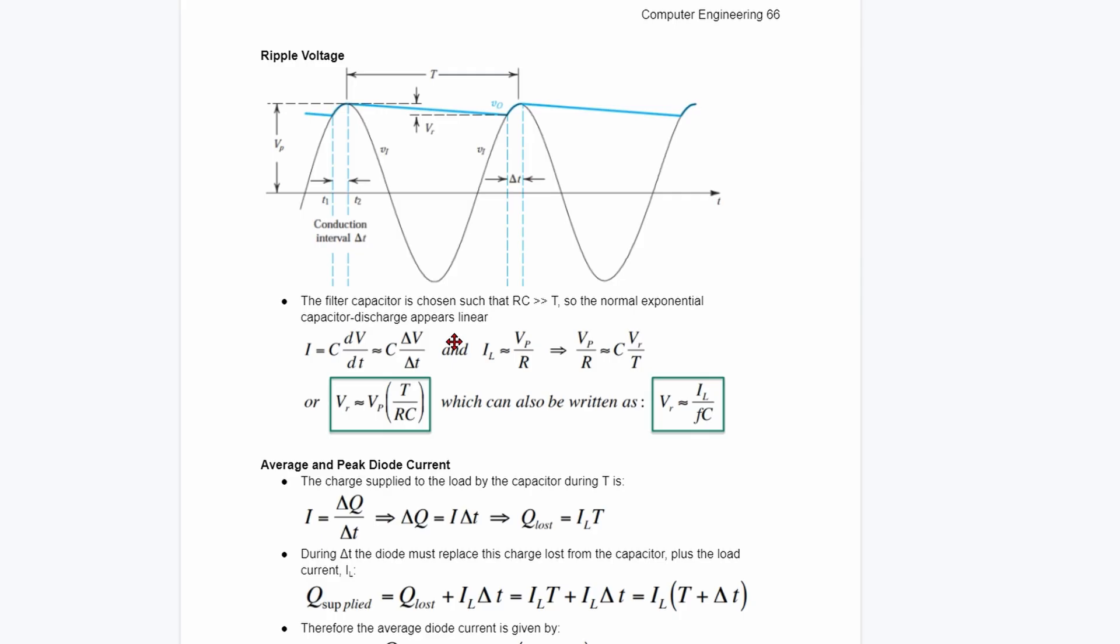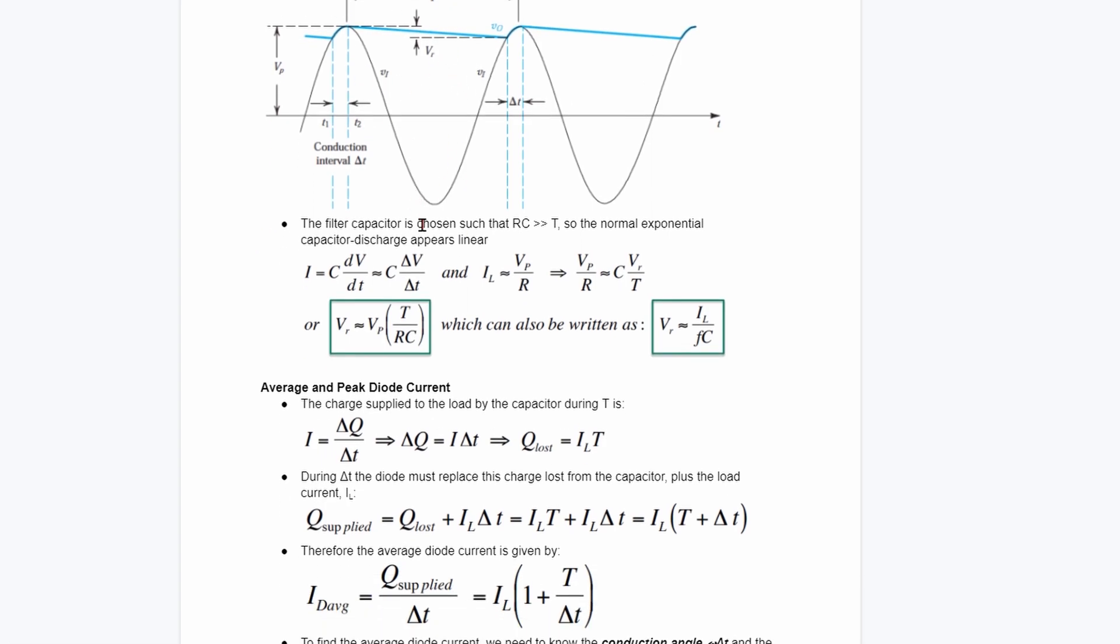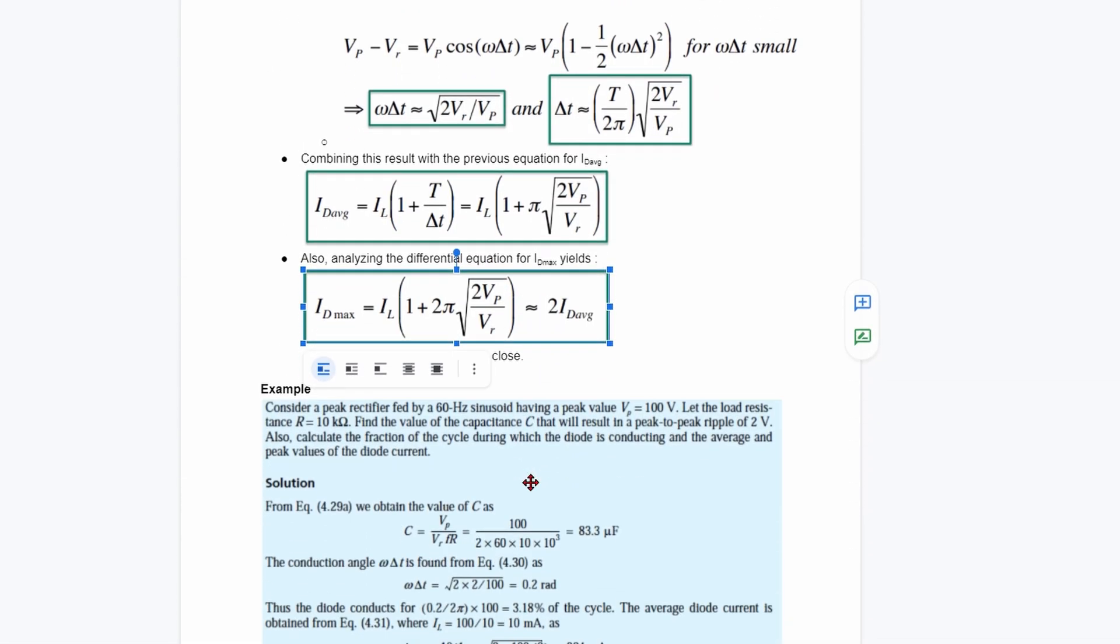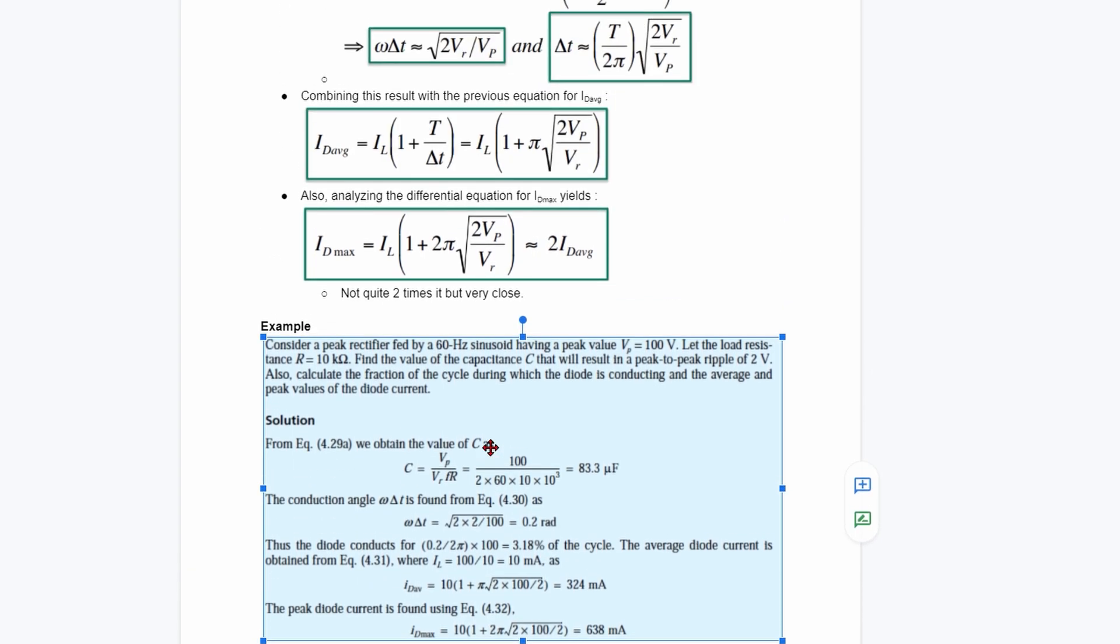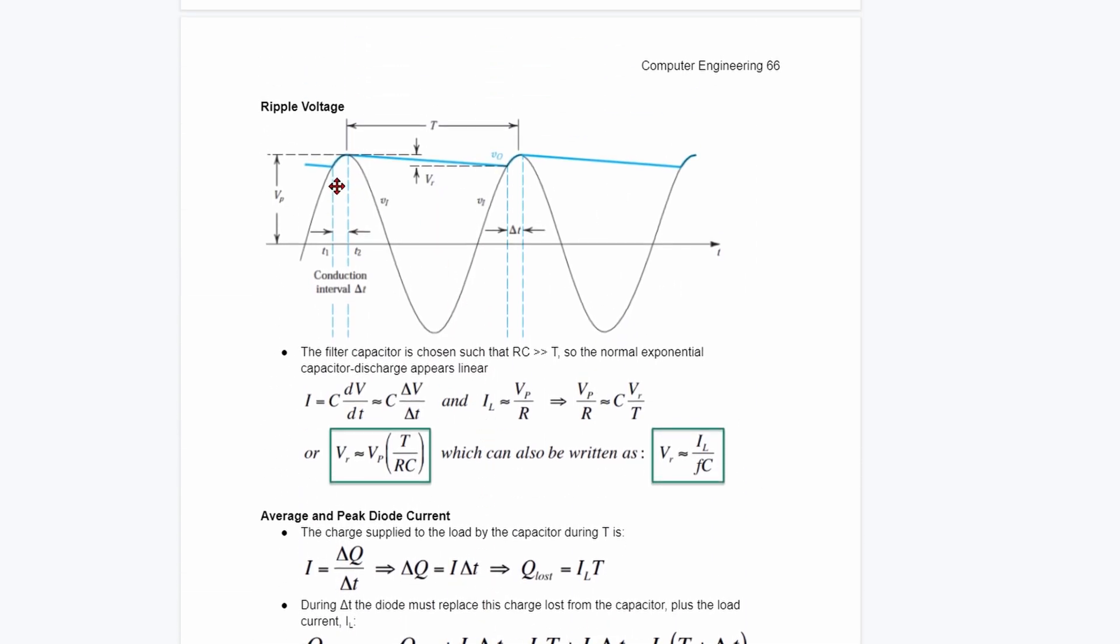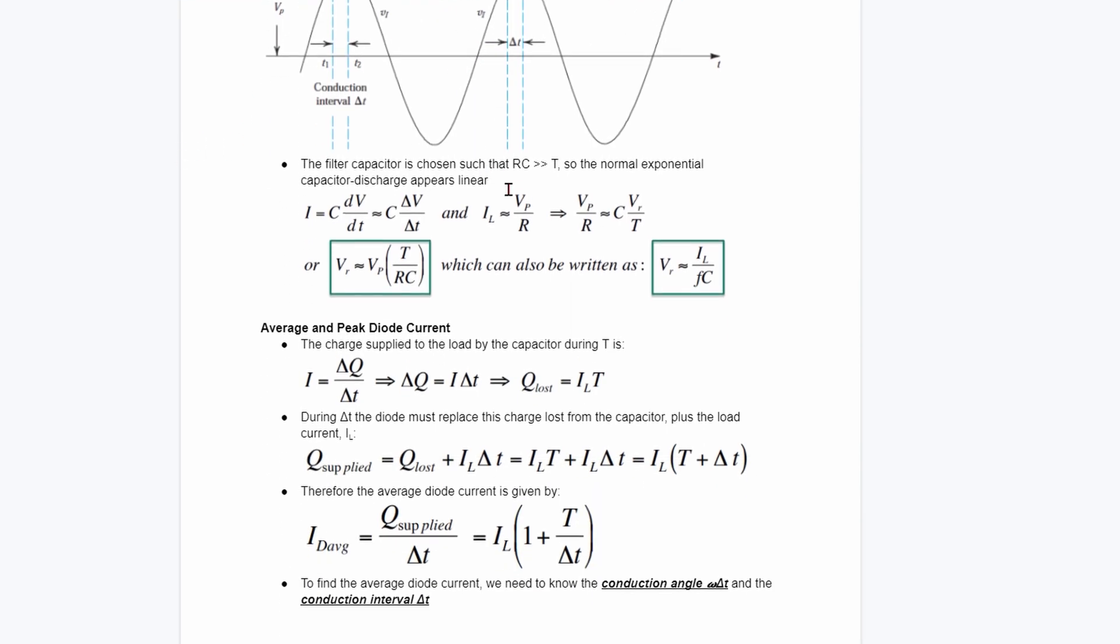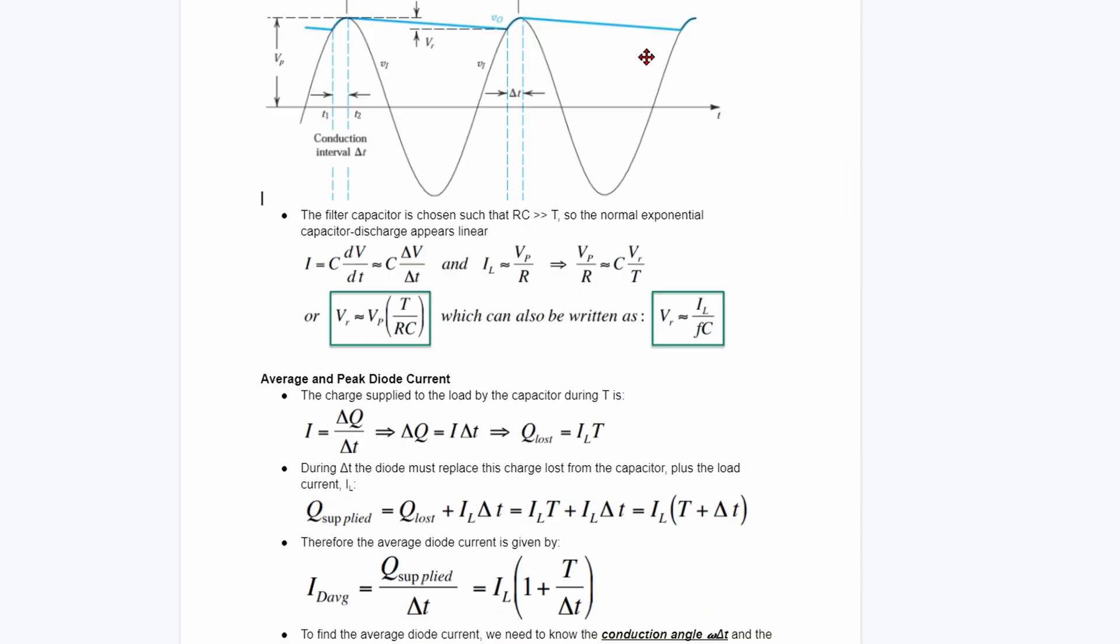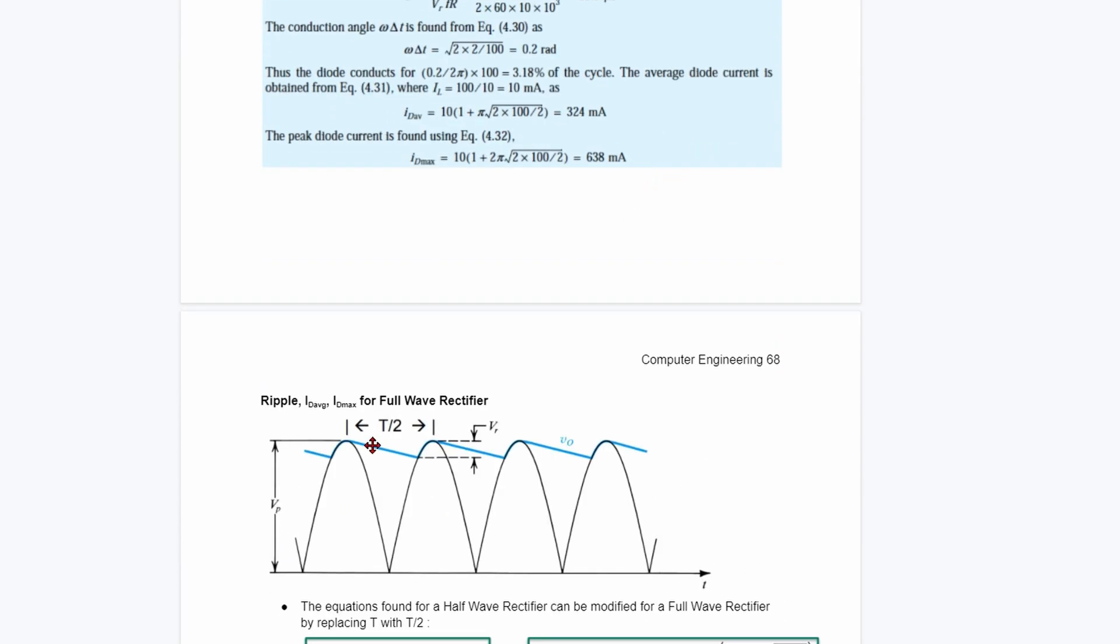We just went over the ripple voltage, and it's going to look something like this. This is what our waveform looks like. These are the equations we're going to be using and how we got some of them. Then we covered an example. We again looked at the ripple voltage. This is the ripple voltage for half wave, and we should note that. We'll do ripple voltage parenthesis half wave.